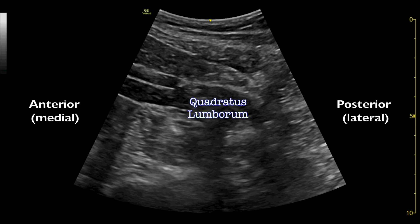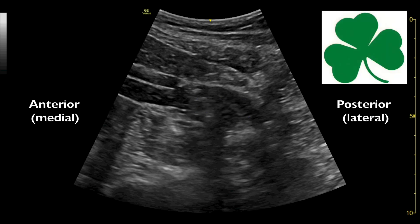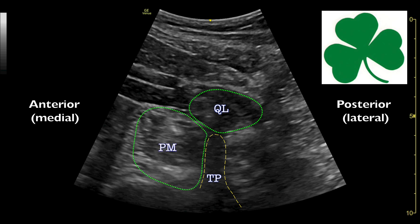Now take a look at the big picture to visualize the shamrock sign. Look for the transverse process — at this level, it is usually the transverse process of L2 or L3 vertebra. The transverse process will be the stem of the shamrock, pointing towards the quadratus lumborum muscle as one of the leaves. The other two leaves of the shamrock are the psoas muscle anteriorly and the erector spinae muscle posteriorly.